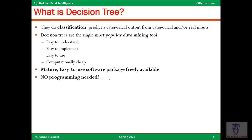You can give the software the data and it will make the decision tree for you. You can then use that decision tree because it's visual and easy to interpret — even a non-technical person can use it, which gives them their popularity. Compared to neural networks, even if you have software with neural networks implemented and you give it data and get output, it's very hard to interpret what's going on, particularly for a non-technical person.